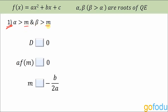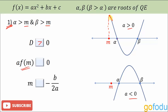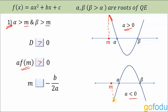The first question says both alpha and beta are greater than a number m, and we have to fill the blank spaces with the correct inequality sign. As the roots are distinct and real, D will be greater than zero. For a·f(m): f(m) is positive and a is positive, so their product is positive; in the case where a is negative, f(m) is also negative, so their product is still positive. Therefore a·f(m) > 0. Also, in both cases, m is less than −b/2a.